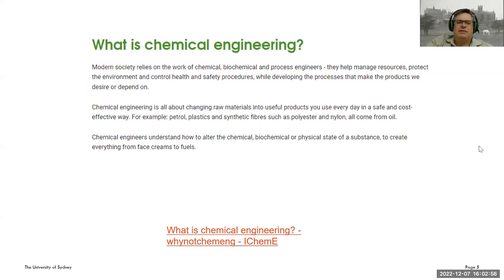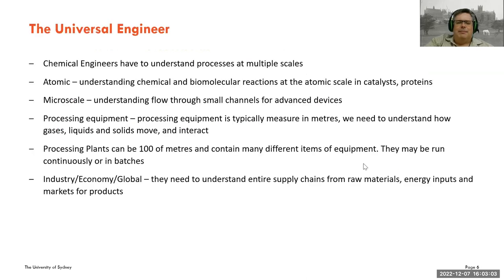IChemE give some examples: petrol, plastics, fibres and so on. Chemical engineers are also called the universal engineer. We have to understand processes at multiple scales — from the atomic scale, to the micro scale, to the size of processing equipment which could be several meters or tens of meters tall, to processing plants which could be the size of your school, as well as entire industries and global economies.